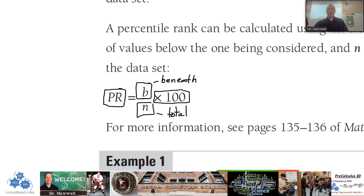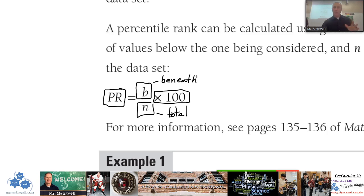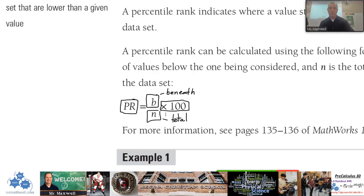For example, if 85 test scores were beneath your test score and there were 100 total, your percentile rank would be 85 divided by 100 times 100, which gives the 85th percentile. Understanding what B is and what N is — that's the bulk of it. So here's example one.